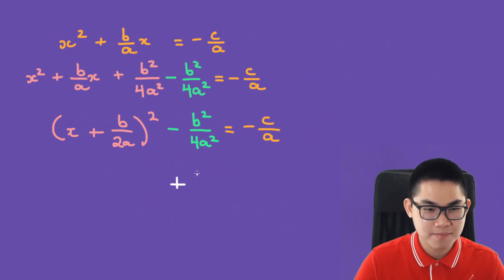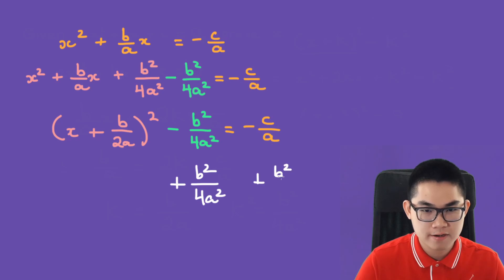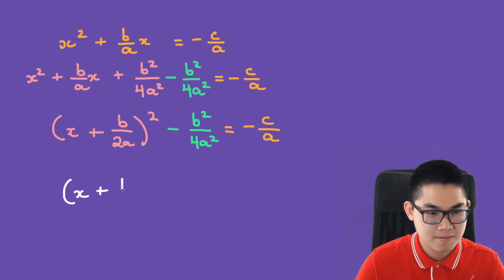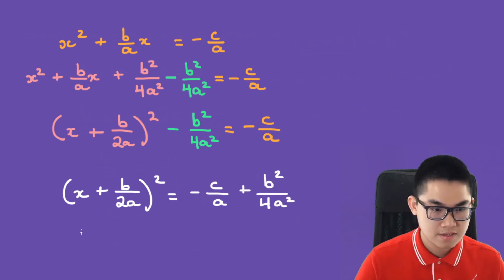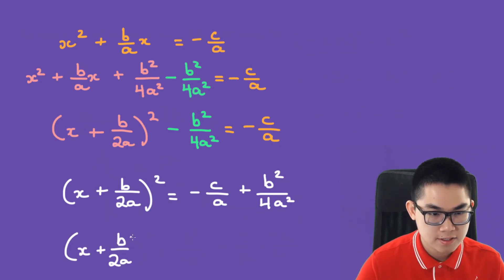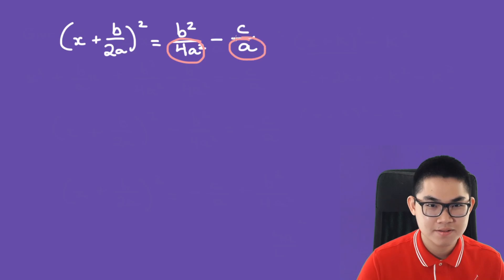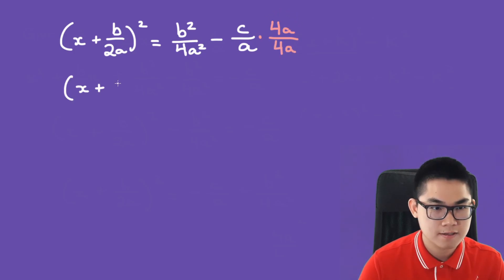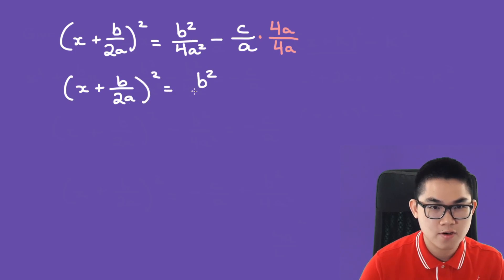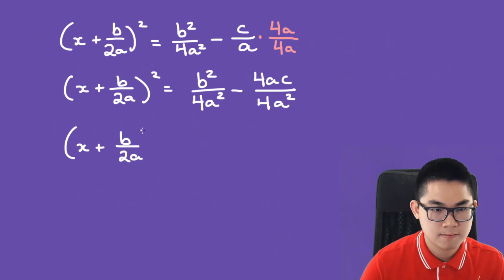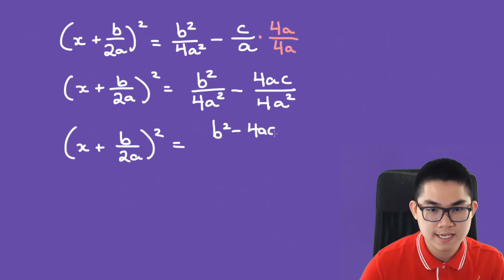We want to solve for x, so let's add b squared over 4a squared to both sides of the equation. So x plus b over 2a to the power of 2 is equal to negative c over a plus b squared over 4a squared. Rewriting: x plus b over 2a to the power of 2 is equal to b squared over 4a squared minus c over a. The common denominator is 4a squared, so we multiply c over a by 4a over 4a, giving us b squared over 4a squared minus 4ac over 4a squared, which is b squared minus 4ac over 4a squared.